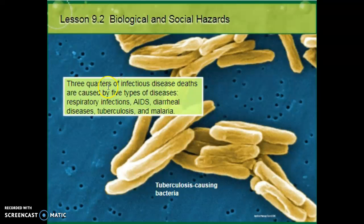75% of the deaths caused by something infectious — diseases that can be passed from one person to another — are caused by five types: respiratory infections, things like tuberculosis, AIDS, diarrheal diseases, tuberculosis, and malaria.